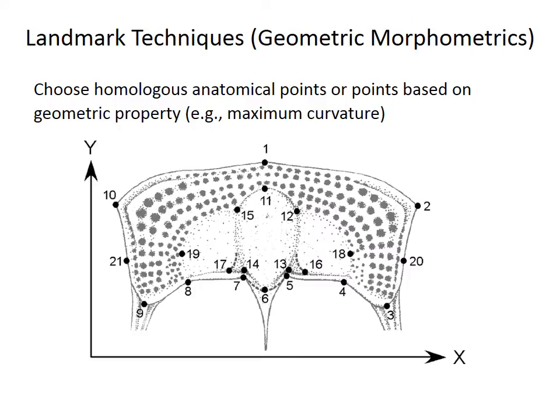A more sophisticated method called geometric morphometrics quantifies shapes based on the position of many landmark points, marked here on this trilobite cephalon. Ideally, a landmark should represent a homologous anatomical feature — meaning that the feature has a shared evolutionary origin among the species under consideration.